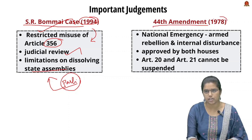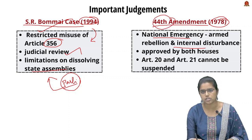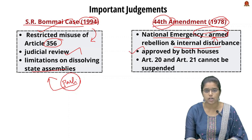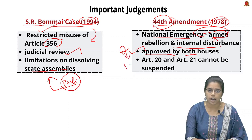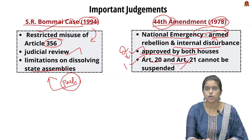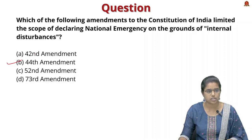The 44th Amendment of 1978 replaced the term 'internal disturbance' with 'armed rebellion' as a ground for National Emergency. It also introduced the requirement that the declaration be approved by both Houses within one month — reduced from the earlier period of two months. Additionally, this amendment confirmed that Articles 20 and 21 cannot be suspended during National Emergency. A related prelims question: which amendment limited declaring National Emergency on grounds of internal disturbances? The answer is the 44th Amendment.